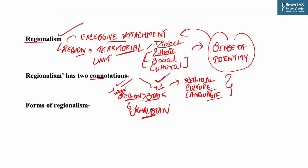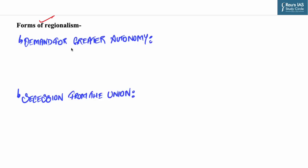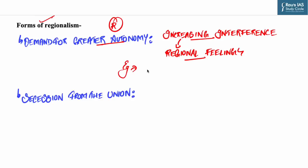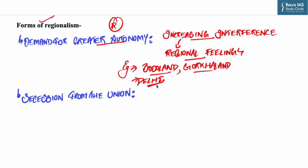Now let us look into the forms of regionalism. First is the demand for greater autonomy. Regionalism has often led to demands by states for greater autonomy from the center, due to increasing interference by the center in state affairs. Demand for autonomy has also been raised by regions within some states — for example, demands for separate statehood like Bodoland, Gorkhaland, Vidarbha, and Telangana, or demand for full statehood as in the case of Delhi, and demand for autonomy like in Kashmir by the National Conference.